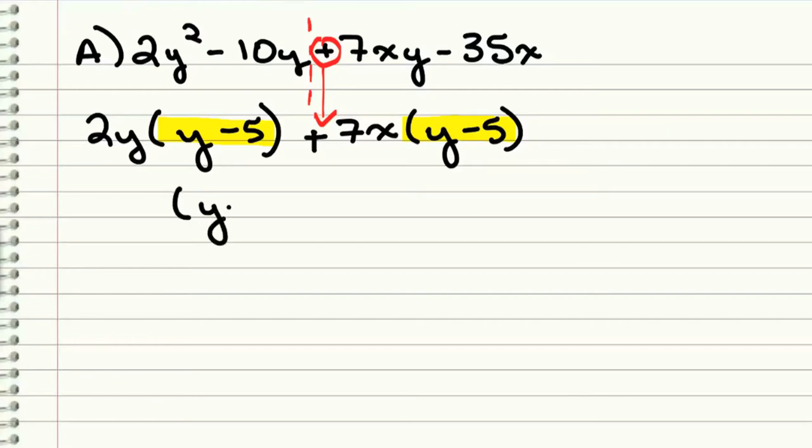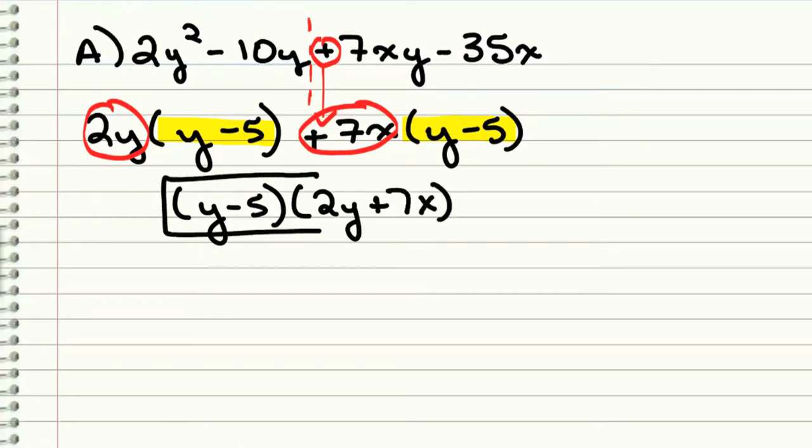So that binomial in common becomes one of our factors, and the other factor comes from these GCFs that we took out. So our other factor is a 2y + 7x.